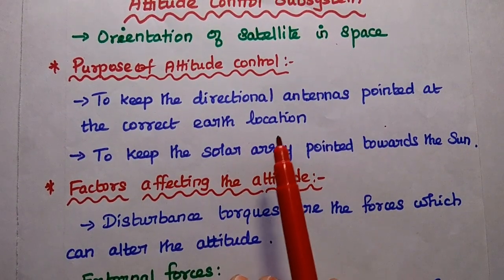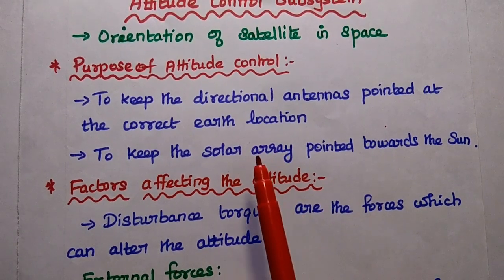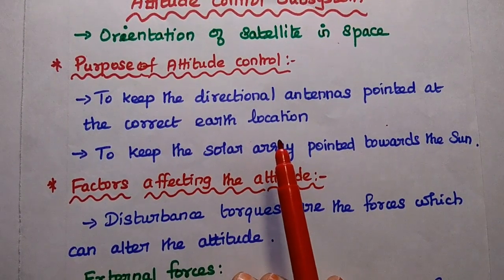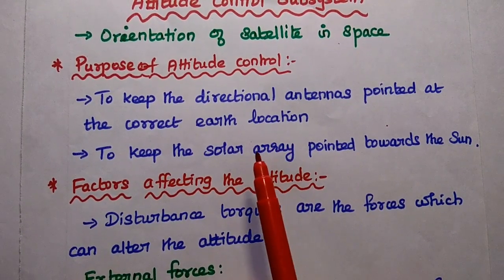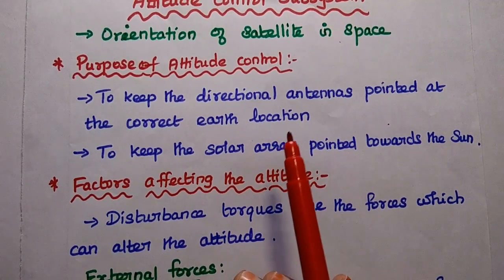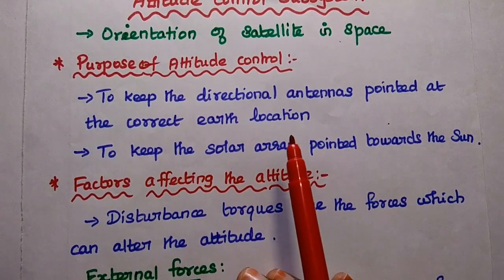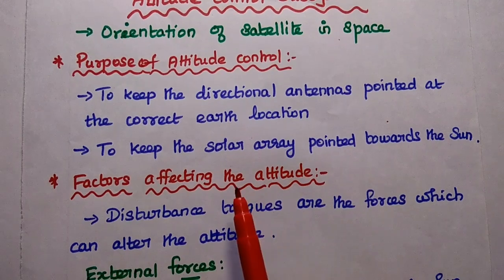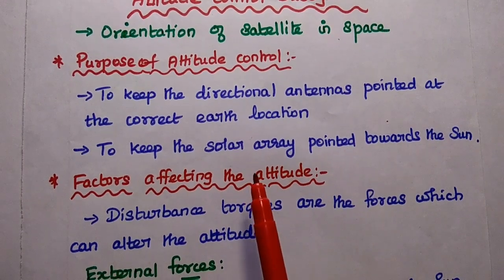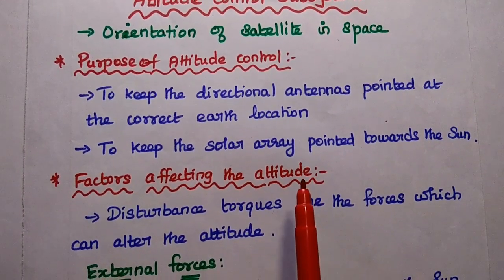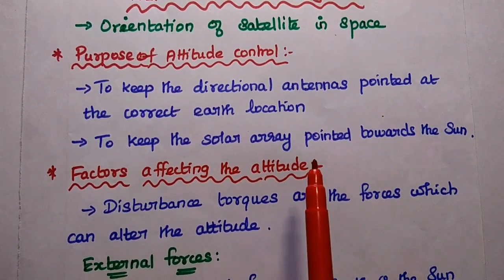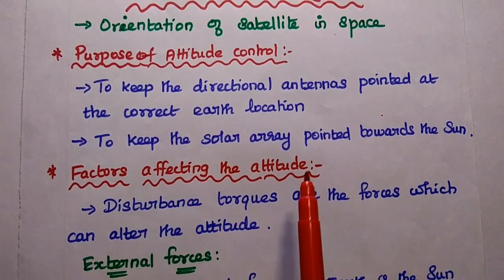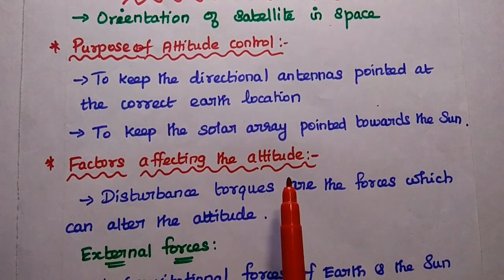For example, in the case of earth environmental satellites, the environmental sensing equipment is pointed towards the proper earth location. The attitude control subsystem is also used to keep the solar array pointed towards the sun for getting more solar energy for the satellite's operation.